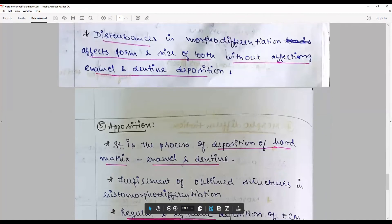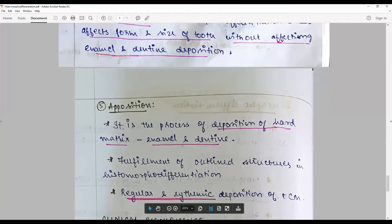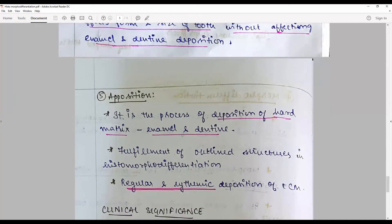Apposition is the process of deposition of hard matrix, namely enamel and dentine. After morpho-differentiation, enlargement and calcification happen in apposition. Fulfillment of outline structures following histo-morpho-differentiation happens in apposition. The regular synthesis and systematic deposition of extracellular matrix as well as subsequent calcification are directly related to the apposition stage.